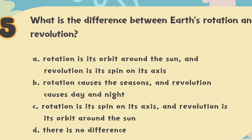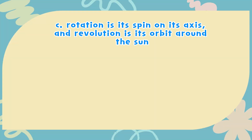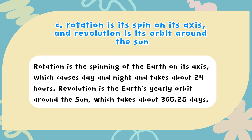The correct answer is C. Rotation is the spinning of the Earth on its axis, which causes day and night, and takes about 24 hours. Revolution is the Earth's yearly orbit around the Sun, which takes about 365.25 days.